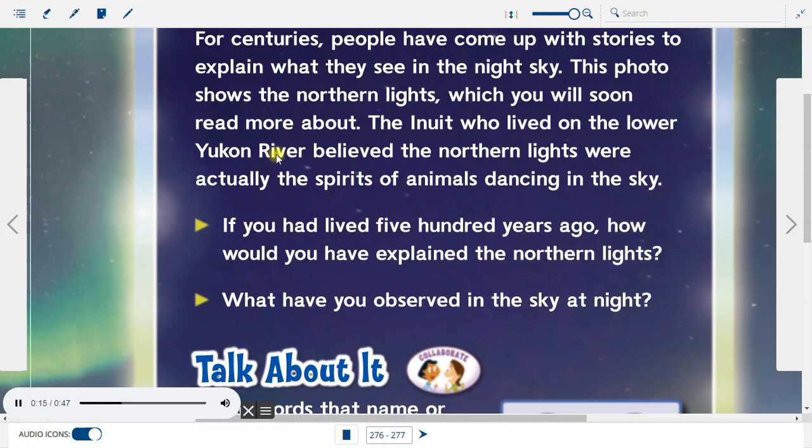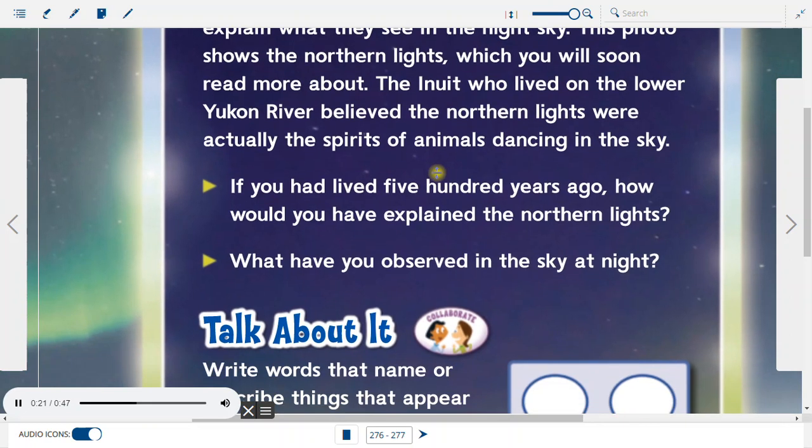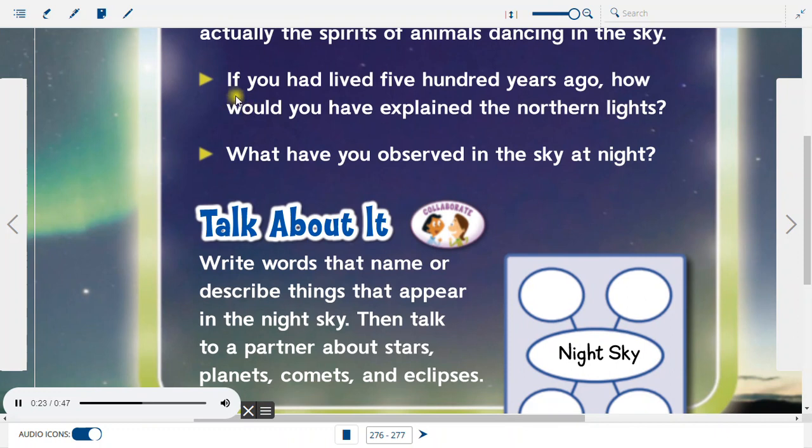The Inuit, who lived on the lower Yukon River, believed the Northern Lights were actually the spirits of animals dancing in the sky. If you had lived five hundred years ago, how would you have explained the Northern Lights?